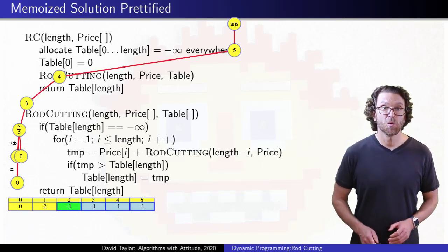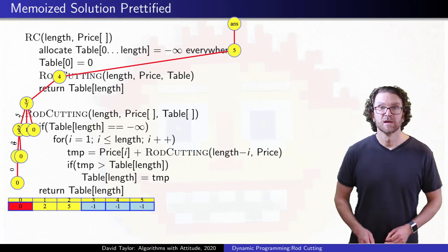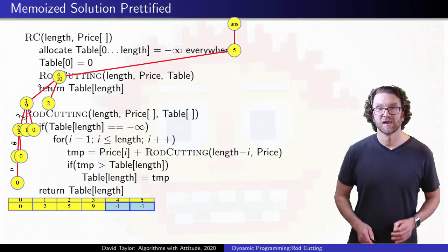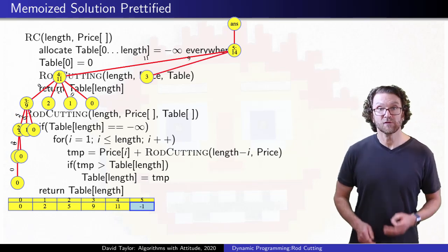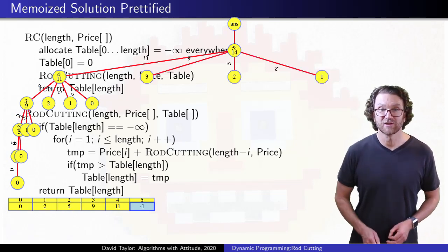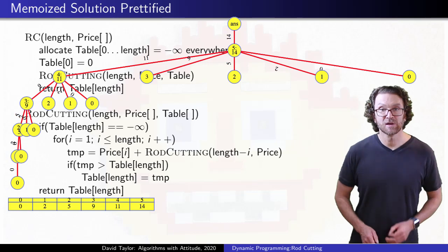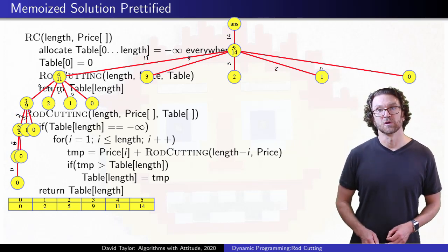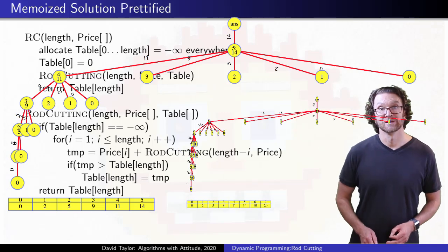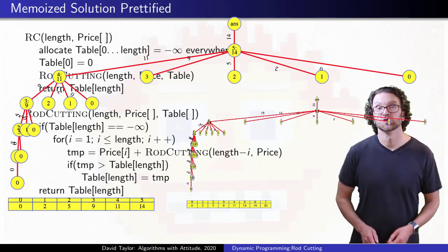Like our first memoized Fibonacci version, every node that isn't on the left spine of the tree has its children pruned, because all of the values get computed on that spine. We store a linear number of answers, and our computation goes much quicker than before.